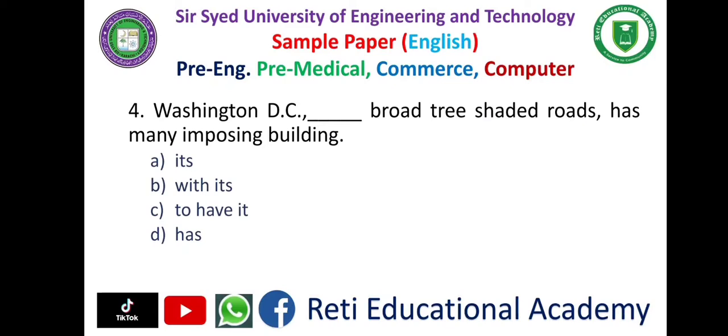Question number 4: 'Washington DC dash broad tree-shaded roads has many imposing buildings.' — A. It's, B. With its, C. To have it, D. Has. The correct answer is B: With its. 'Washington DC with its broad tree-shaded roads has many imposing buildings.'